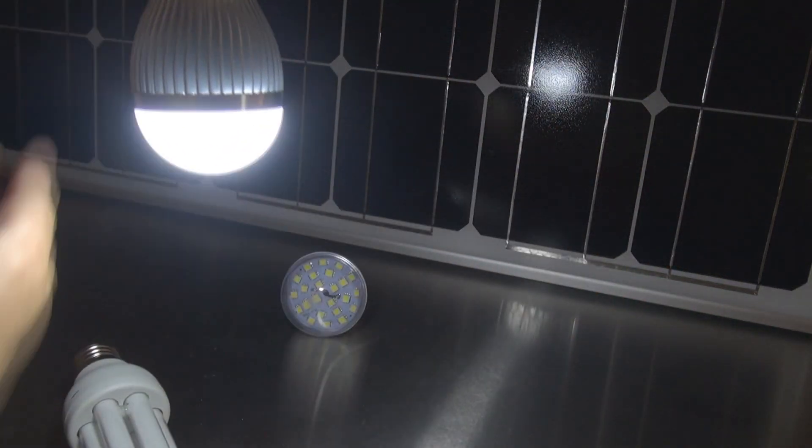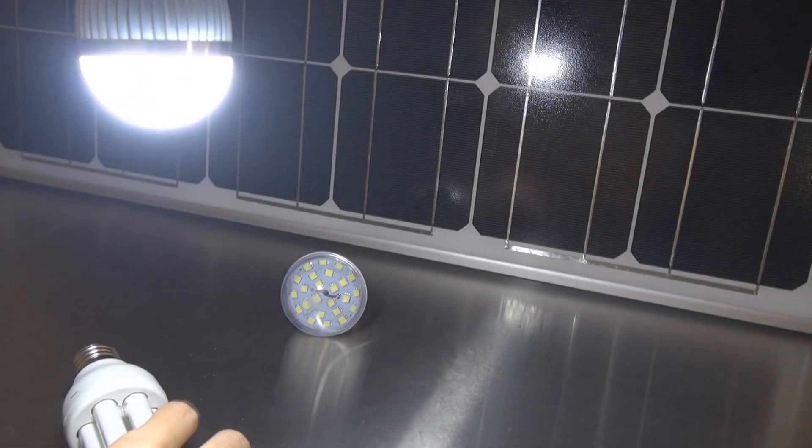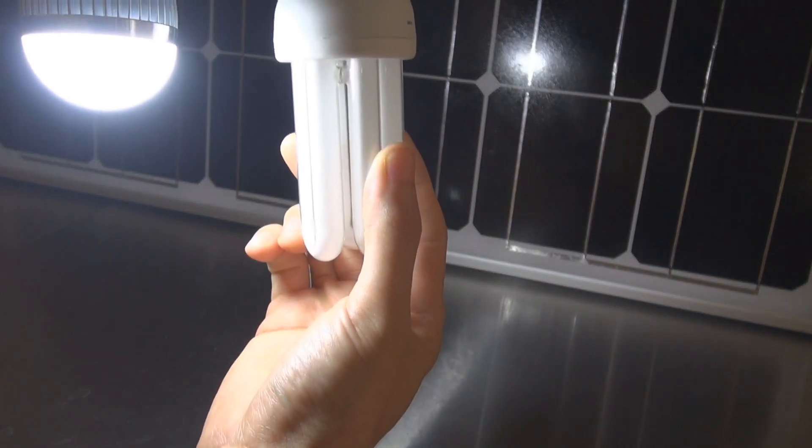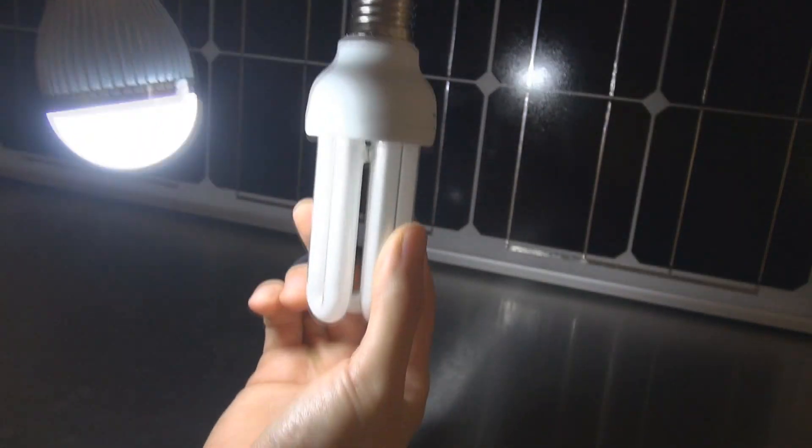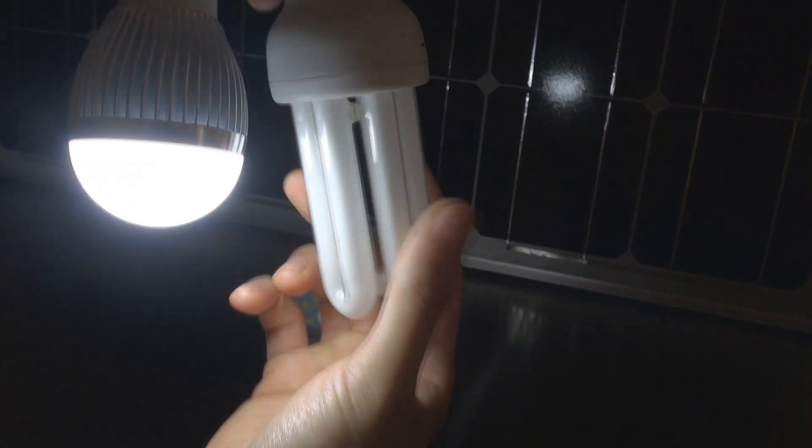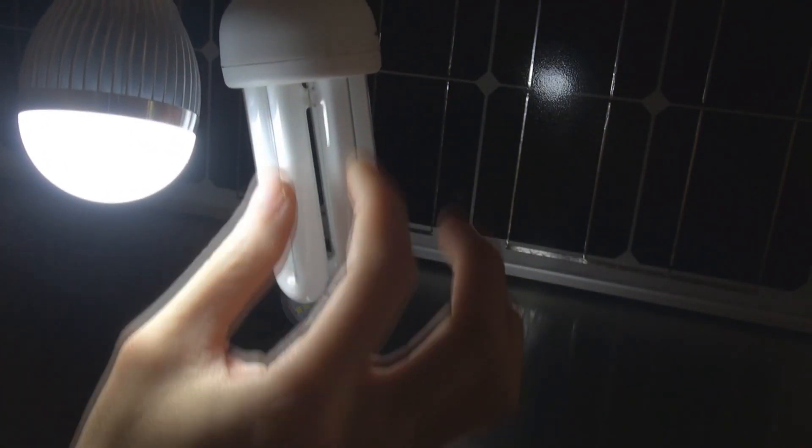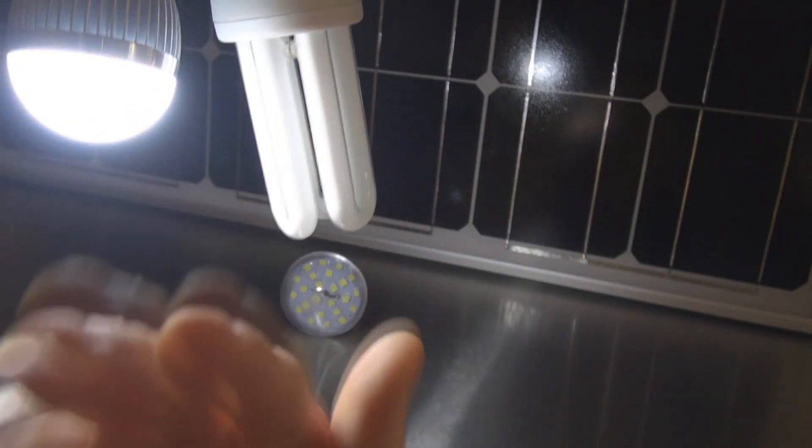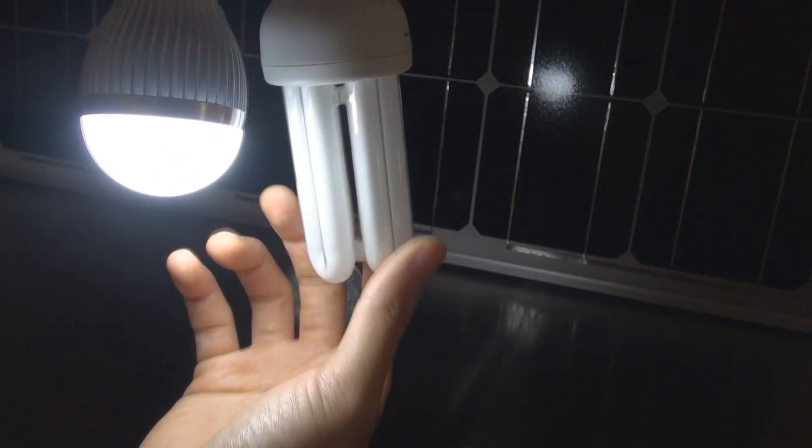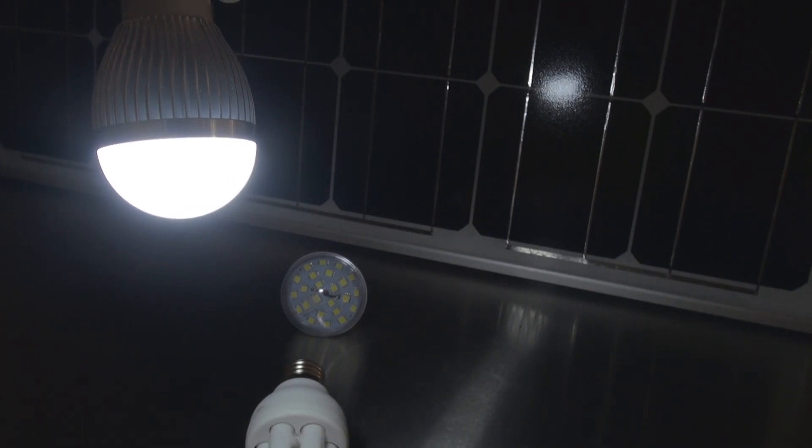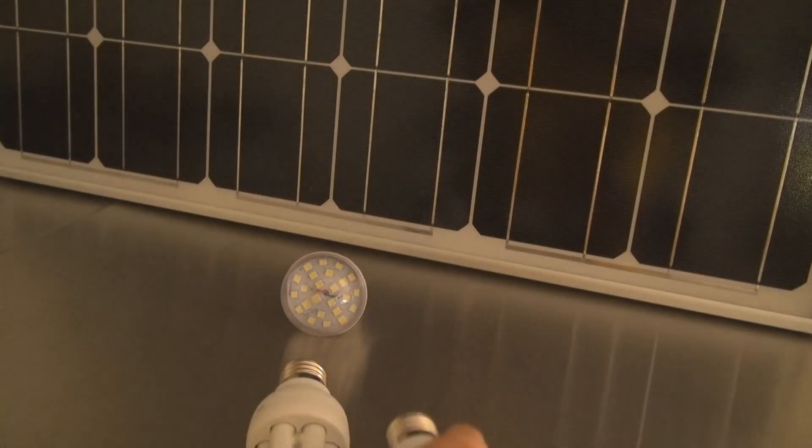But if you need the light to be dispersed 360 degrees, of course the CFL will still beat this 3W because the CFL here has the longer lighting. So the way they disperse the light is definitely going to be more. I can just show you again why it's going to be more.